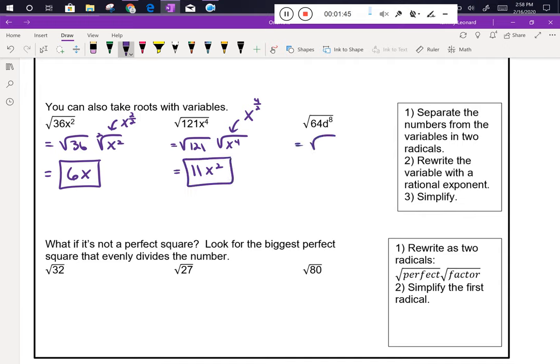In the next problem we have the square root of 64d to the eighth. Well, we know that the square root of 64 is 8. For d to the eighth, we call it d to the 8 divided by 2, which we see is d to the fourth.